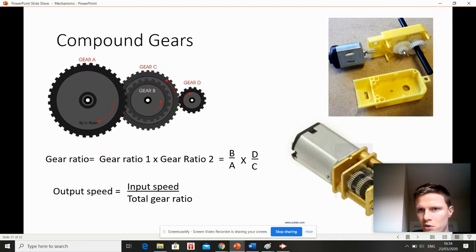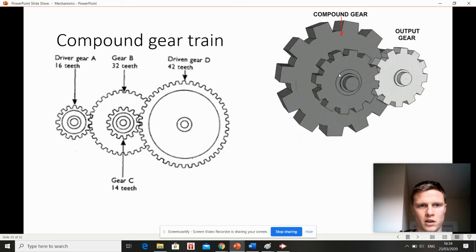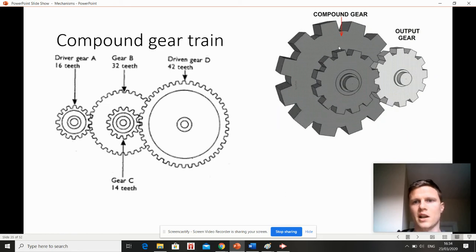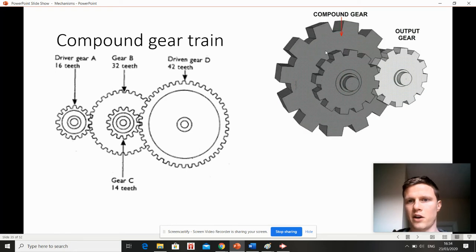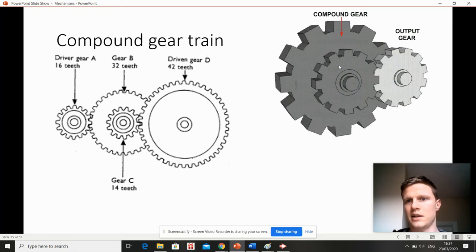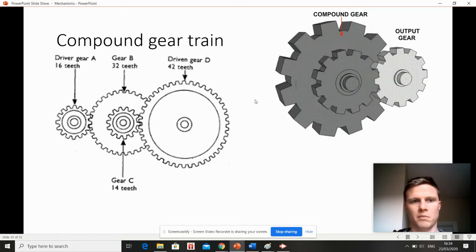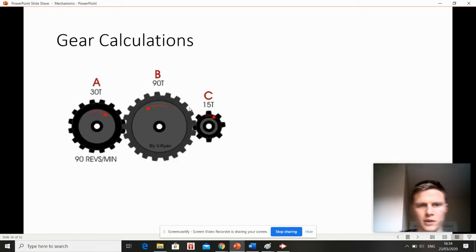Compound gears are when two gears share the same axle. If you have a look at this compound gear question here, you can see that these two gears are on the exact same axle, so these two ones here are turning at the same time. The way you solve one of these questions...